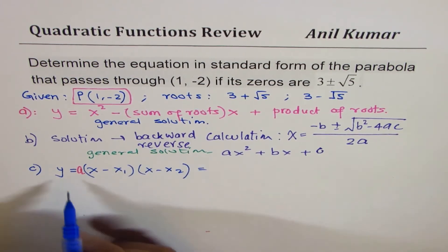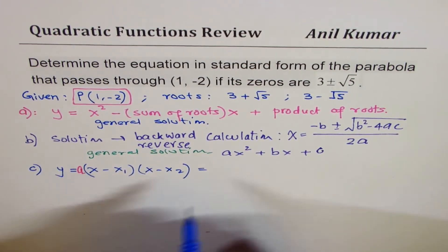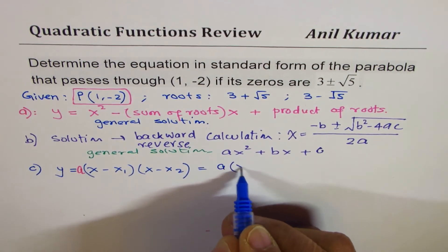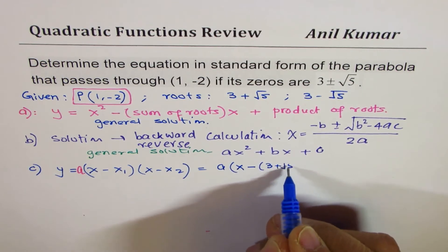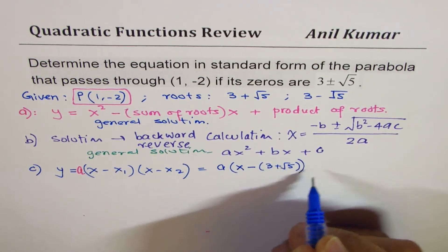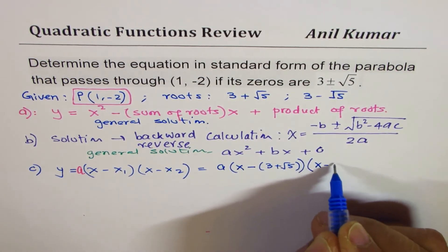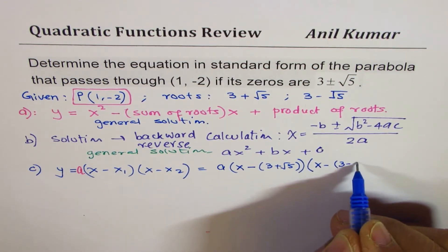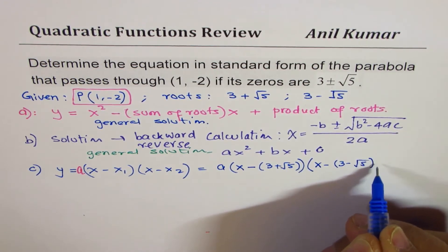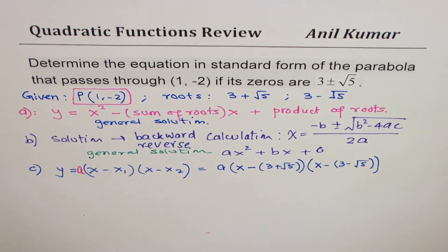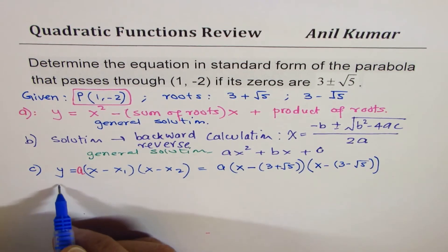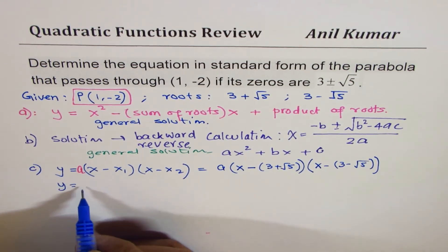Using this formula we could write y = a(x - (3 + √5))(x - (3 - √5)). So this bracket is for that one, the second bracket closed. So I'm running out of space I can see it very clearly.